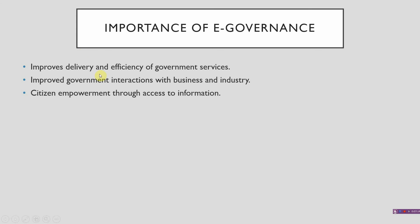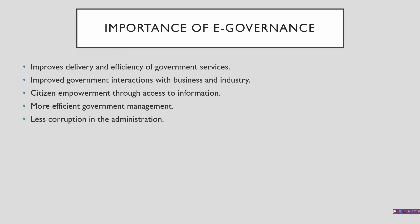Next comes citizen empowerment through access to information — it simply means easy access, that the public can have easy access to relevant records and get their grievances redressed more effectively. Next comes more efficient government management — if everything is being done online, e-filing forms and documents reduces paperwork and brings efficiency in the management of work. After that comes less corruption in the administration, as everything is in open space, reducing the chances of corruption. Next comes increased transparency in administration.